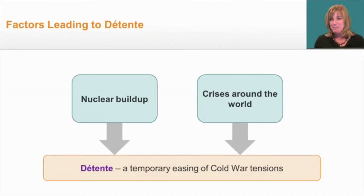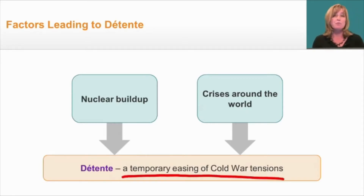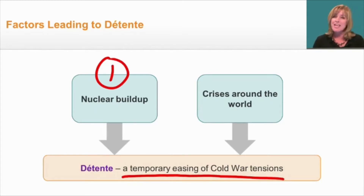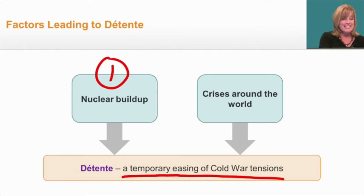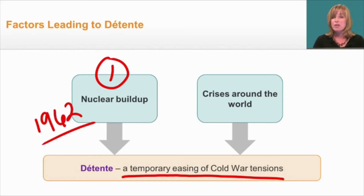There are two important factors leading to detente, or a temporary easing of Cold War tensions. The first is the nuclear buildup. Both the Soviet Union and the United States were building lots of nuclear weapons, and these weapons were growing more powerful. They were also building missiles allowing those weapons to be launched over much longer distances, increasing tensions. In 1962, the Cuban Missile Crisis showed that the arms race almost led to an actual shooting war between the Soviets and the United States.